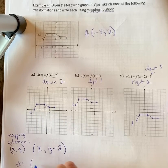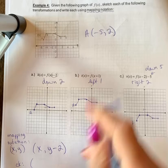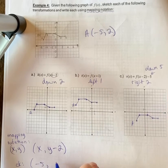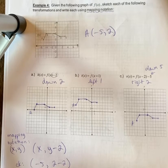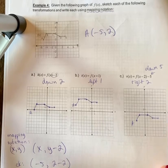If we check that one, this was the point negative 5 and 2, so negative 5 stayed the same. The y value of 2, if we subtract 2, our new point was negative 5 and 0. That's a strategy.